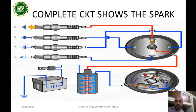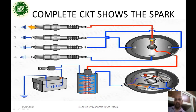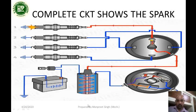The spark plug transfers spark to the cylinder at the right time. That is the contact breaker point ignition system. In the next video, I will post a video on the electronic ignition system, and we will study the main difference between the contact breaker ignition system and the electronic ignition system.